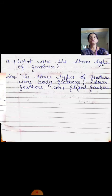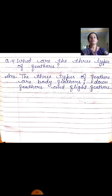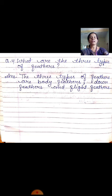Now come to the fourth question: what are the three types of feathers? Aapko batana hai birds ke jo three types of feathers hain, vo kaun se hain? The answer will be: the three types of feathers are body feathers, down feathers, and flight feathers.